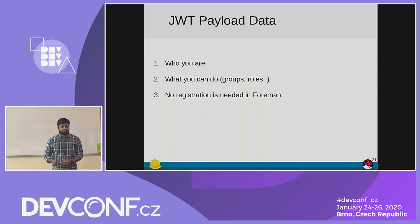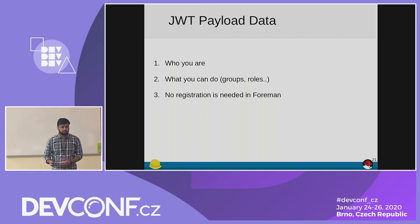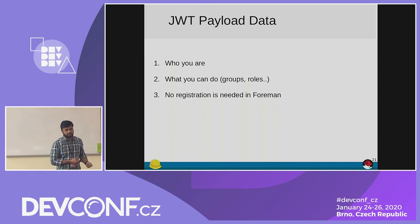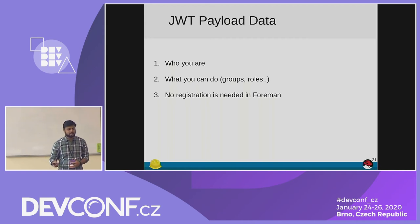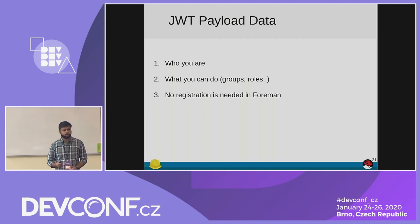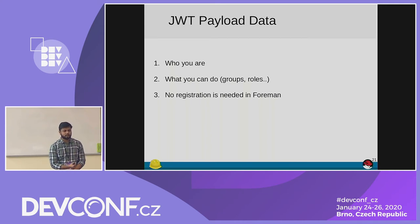Coming to the payload: the payload decides who you are — that means your authentication, whether you are a valid user for that particular application. The next is what you can do — that is your groups, roles, and permissions. And you don't need to register that user on your application side. In this case it's Foreman. That means based on your token values, the user will automatically get created in your application.